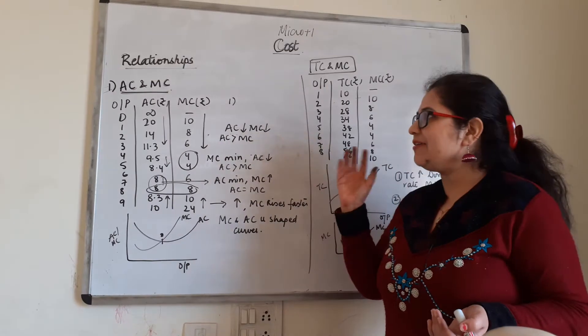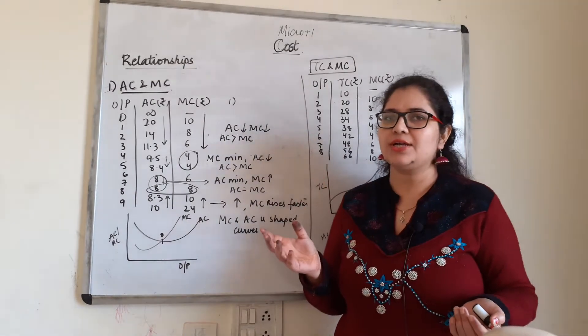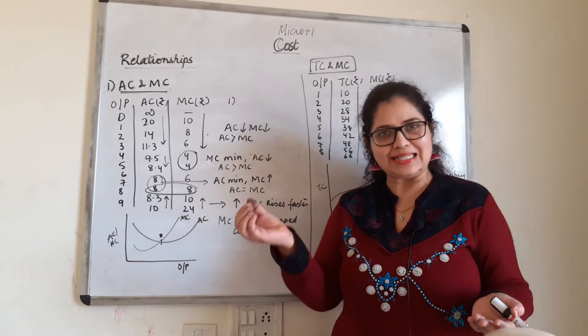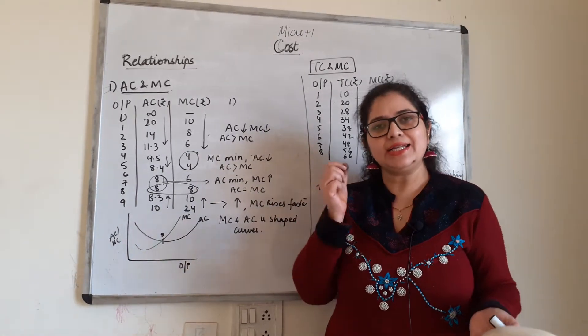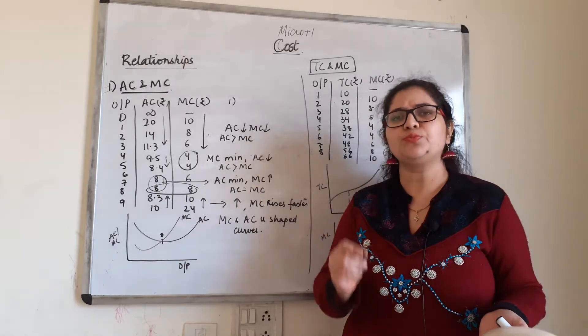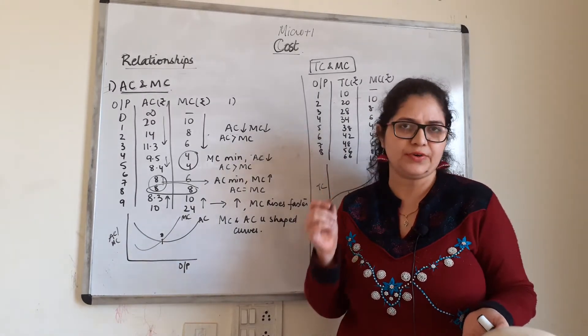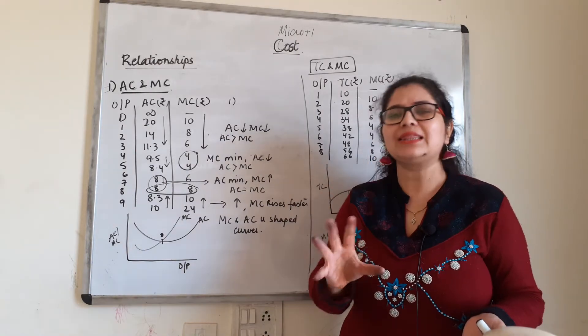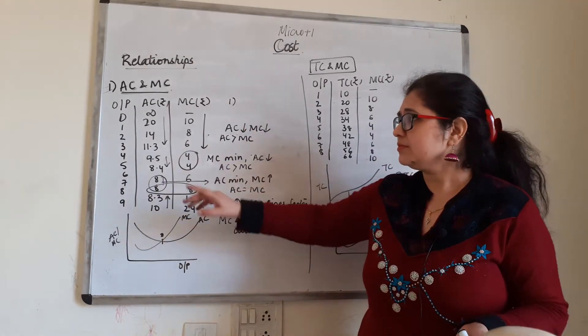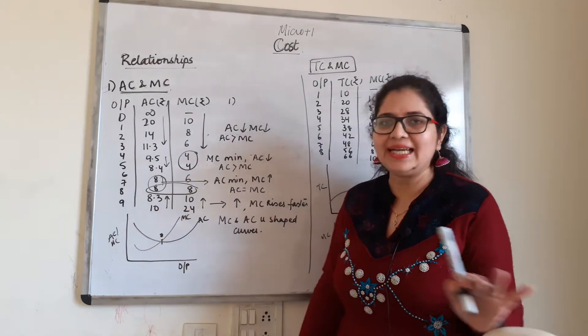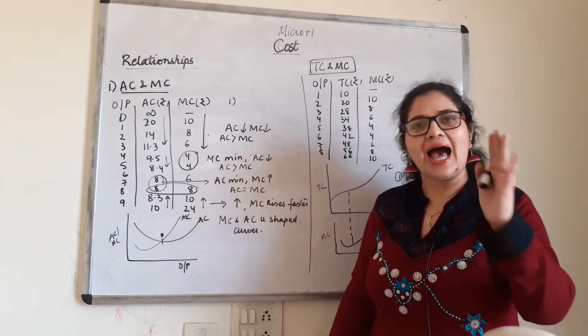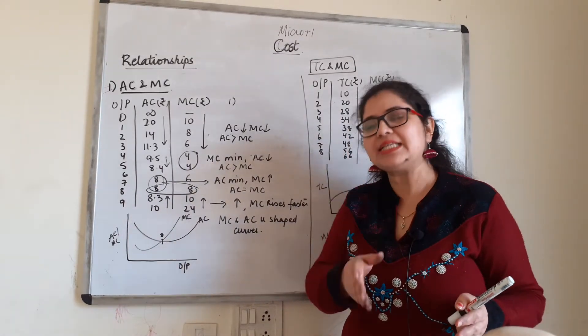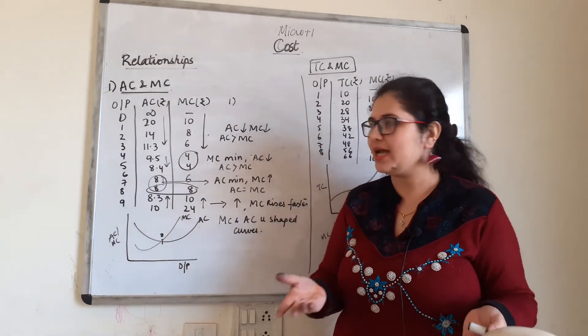Let's begin. So, average cost and marginal cost relationship. What is average cost? Cost per unit, TC by Q. What is marginal cost? It is change in total cost due to production of an additional unit of a commodity. That is marginal cost. Now, I have created a table. I have not taken a table in TC. If you don't remember the table, then you can take TC and then you can derive AC and MC from TC.